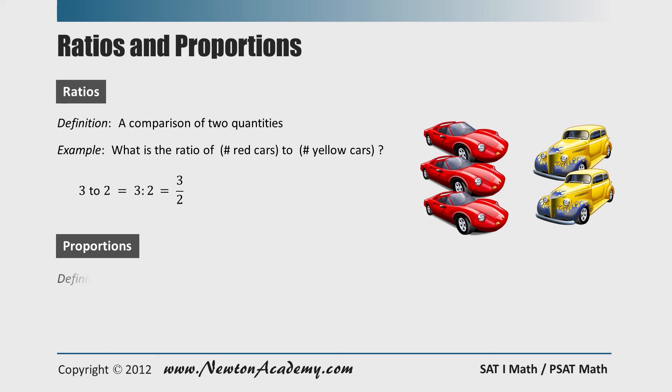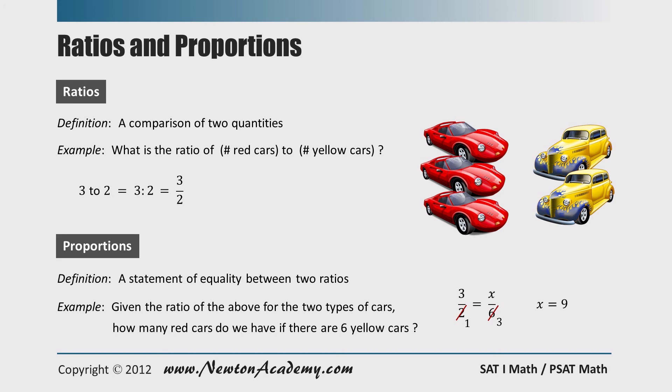Now, what is a proportion? It is a statement of equality between two ratios. Let me give you an example. If three to two is the ratio between the number of red cars and the number of yellow cars, how many red cars do we have if there are six yellow cars? In this case, what is not changing is the ratio between two kinds of cars. So the equality will be three red cars to two yellow cars, or three red cars over two yellow cars is equal to x red cars to six yellow cars. After we reduce two and six and cross multiplication, we have x equals nine. So we have nine red cars for this problem.